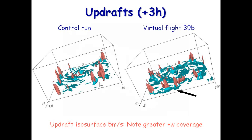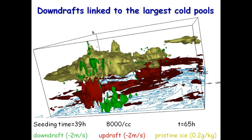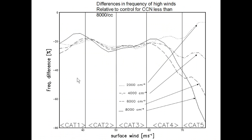Looking at supercooled water amounts, this is a control, and you can see much greater supercooled water here in the outer rain band regions compared to the control simulation. Cold pools are more vigorous, especially in the higher seeding amounts.